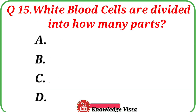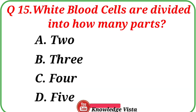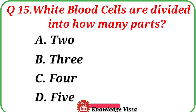Question number 15: White blood cells are divided into how many parts? Option A: 2. Option B: 3. Option C: 4. Option D: 5. The correct answer is option A, 2. White blood cells, also known as leukocytes, can be divided into two parts: granulocytes and agranulocytes.